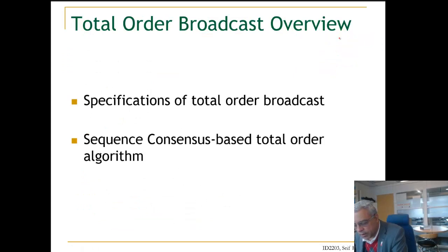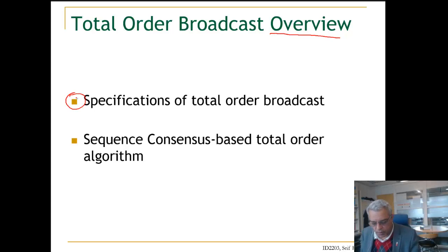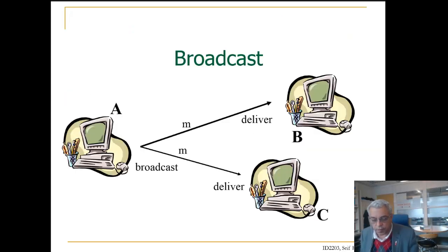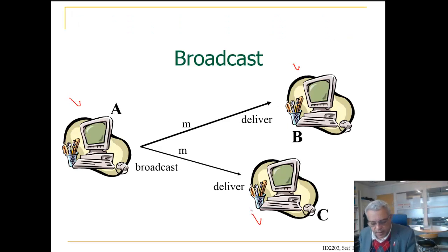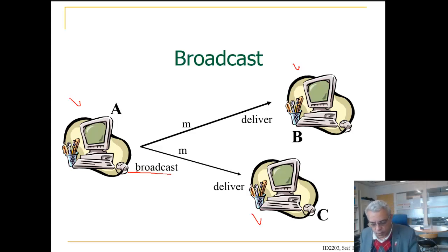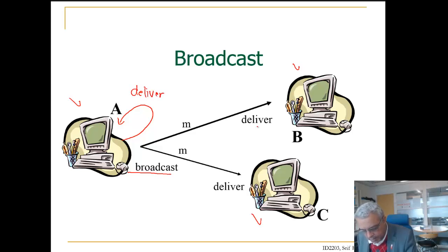Let us now look at total order broadcast. We start with an overview and the specification of total order broadcast, followed by a sequence-consensus-based total order broadcast algorithm. We have a number of processes, and any process can perform a broadcast. This broadcast is going to be delivered to all processes in the system — we have a fixed set of nodes, so we deliver to every node.